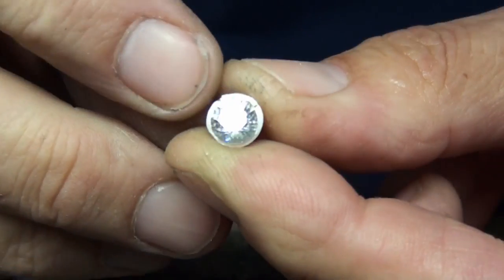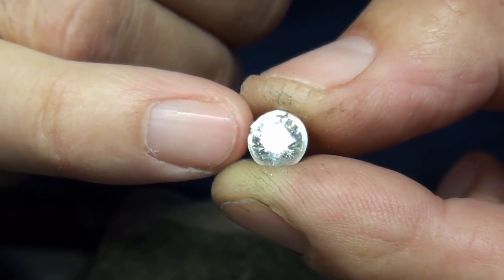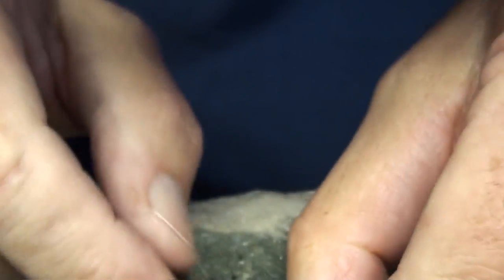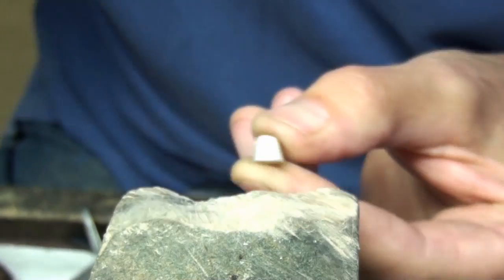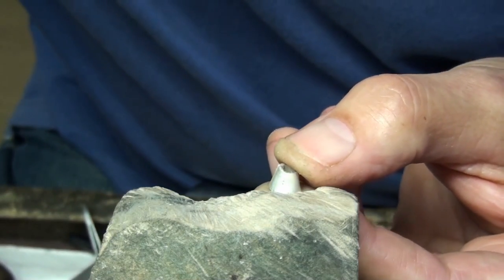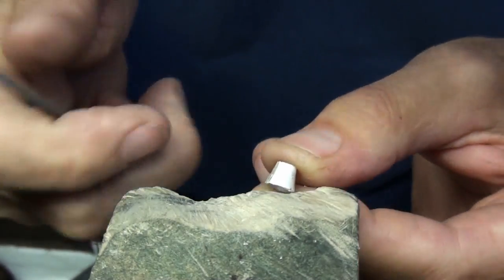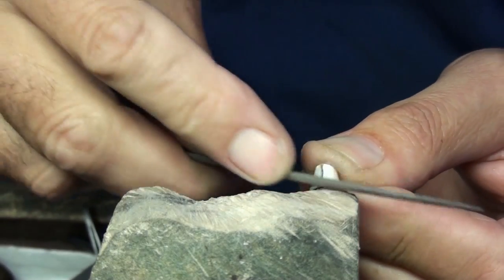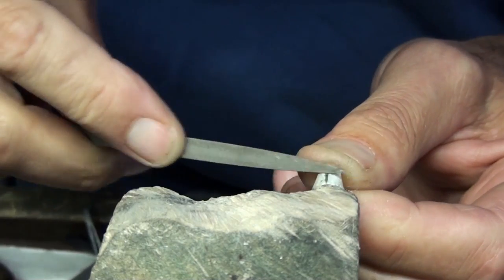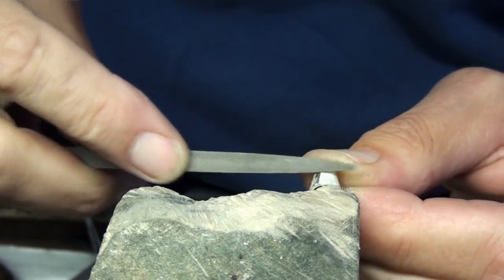That's where it's sat now on the setting, and I like a stone to sit around about a third of the way into the thickness, so I think that's going to work really well. The reason that I like the stone to sit that way is it makes it a lot easier for bezel setting.